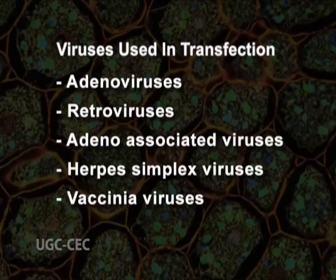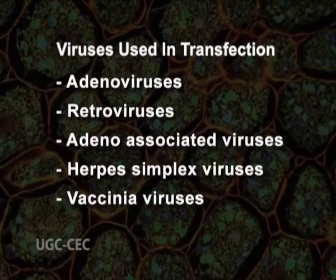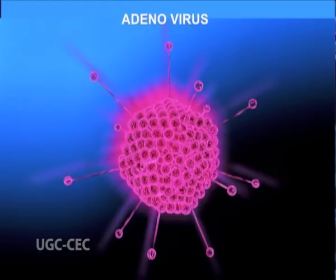Adenoviruses, retroviruses, adeno-associated viruses, herpes simplex virus, and vaccinia viruses are commonly used for gene transfer. Adenoviruses are commonly used to transfect dividing and non-dividing cells. They can carry a gene length of 7 to 8 kb and produce 10 to the power 10 to 10 to the power 11 viral particles per mL. They allow only transient expression of the transgene; therefore, they are poor gene therapy vectors.